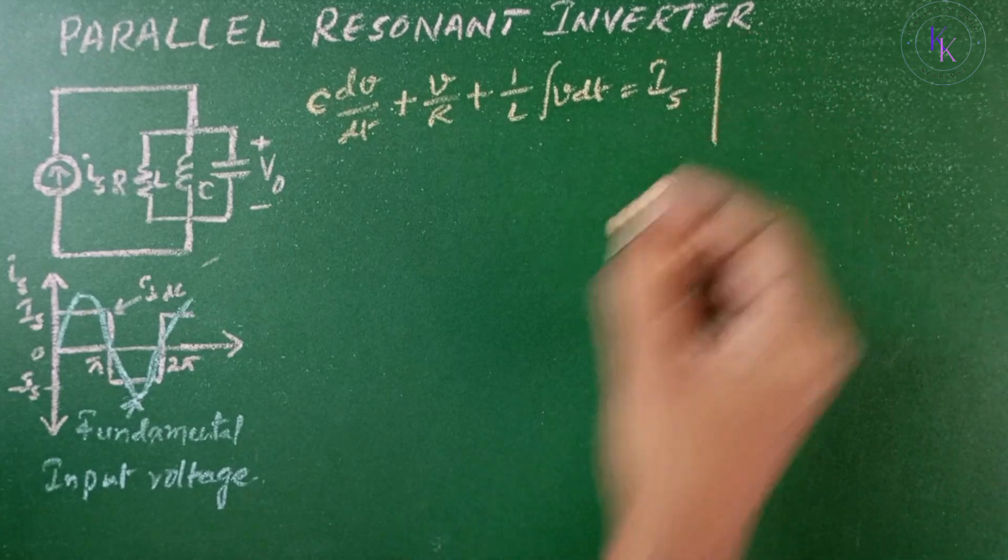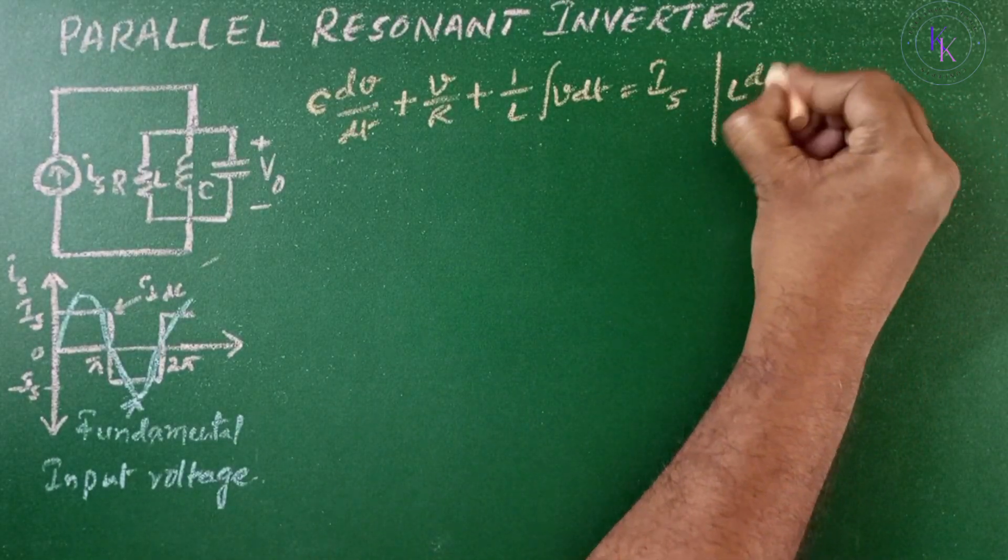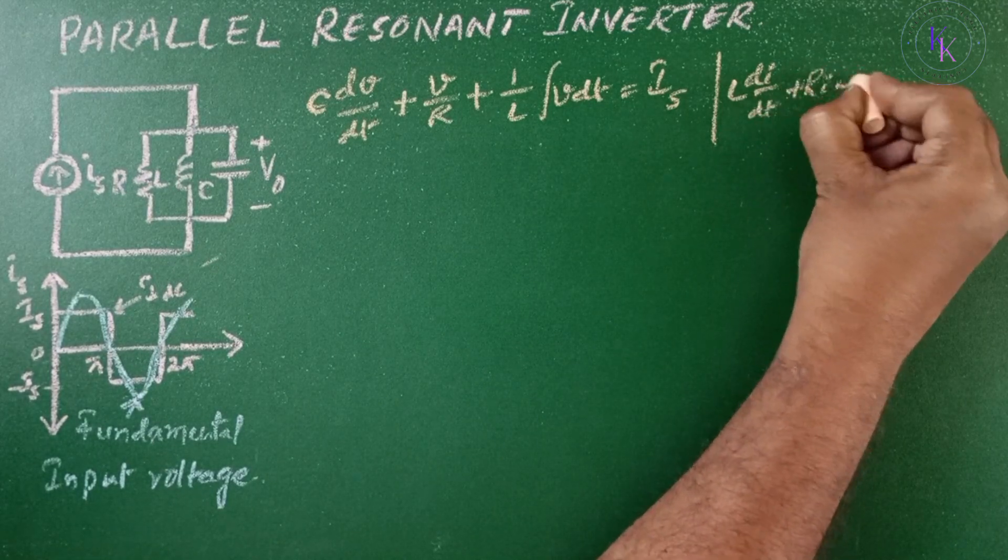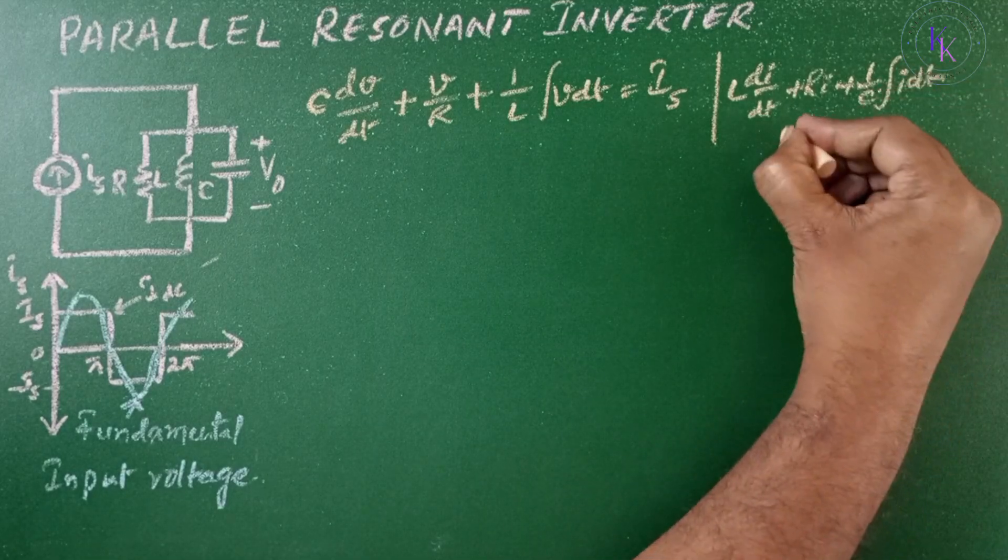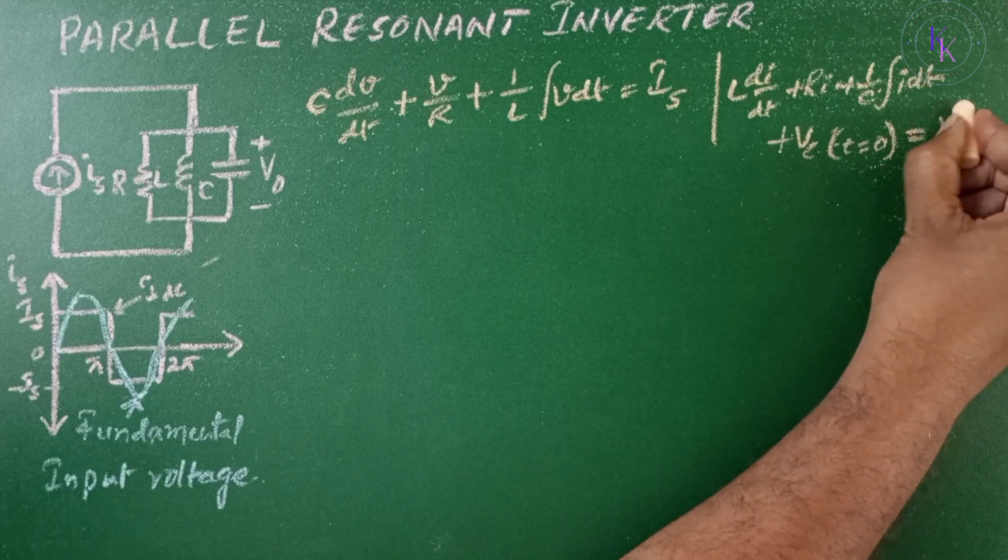And this is dual to a series resonant inverter. The equation is L dI/dt plus Ri plus 1/C integral i dt plus Vc at t equals 0 equals Vs.